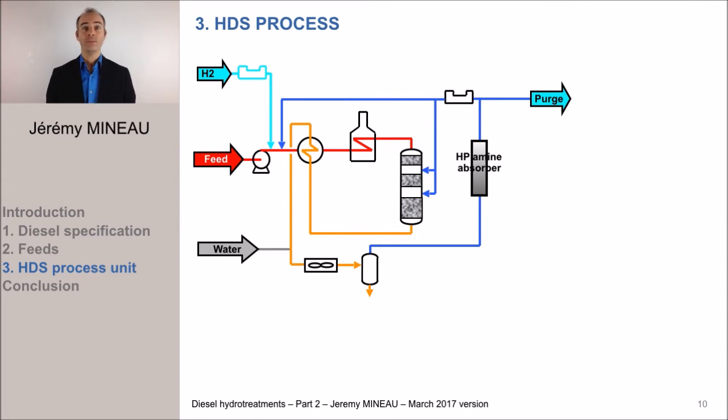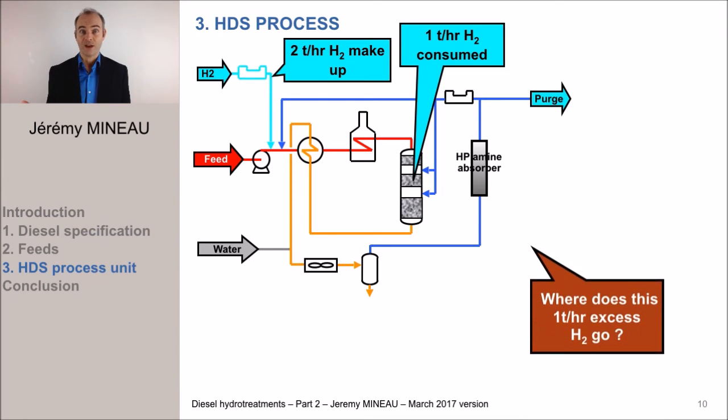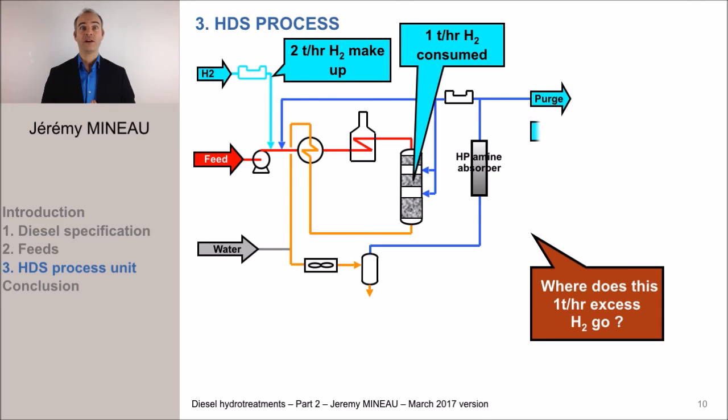Let's speak one moment about the overall mass balance within the unit. For doing that, imagine a unit in which we consume about 1 tonne per hour of hydrogen in the reactor for the reactions and in which we intentionally decide to bring 2 tons per hour of hydrogen in a makeup gas. The overall hydrogen mass balance imposes that 1 tonne per hour of hydrogen has to leave the reaction section. But where does this hydrogen go?